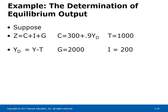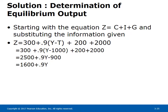The determination of equilibrium output — numerical example. Suppose Z equals C plus I plus G, where C equals 300 plus 0.9·YD, T equals 1,000, YD equals Y minus T, G equals 2,000, and I equals 200. Starting with Z equals C plus I plus G and substituting: Z equals 300 plus 0.9·(Y minus T) plus 200 plus 2,000 equals 300 plus 0.9·(Y minus 1,000) plus 200 plus 2,000 equals 2,500 plus 0.9Y minus 900 equals 1,600 plus 0.9Y.